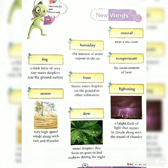Storm — very high speed winds along with rain and thunder. Dew — water droplets that form on grass or leaf surface during the night. Lightning — a bright flash of light that occurs in clouds along with the sound of thunder.